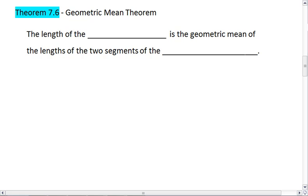For these two theorems, it's important to realize that we're still working with our right triangle that has an altitude that drops down to the hypotenuse.